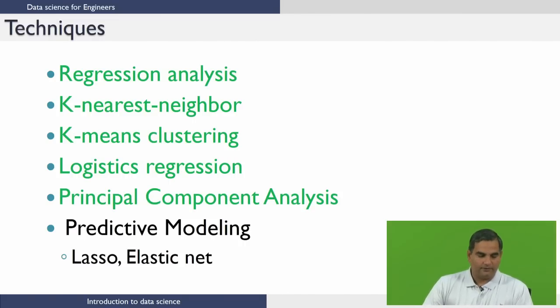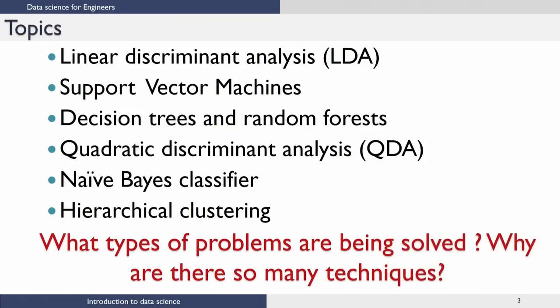Then people talk about predictive modelling, under which there are techniques such as lasso and elastic net. Then there are techniques such as linear discriminant analysis, support vector machines, decision trees and random forest, quadratic discriminant analysis, naive Bayes classifier, hierarchical clustering and many more such as deep networks and so on. To get a general idea of data science, one might be tempted to ask: if all of these collections of techniques solve data science problems, then what types of problems are being solved really, and do you need so many techniques for those types of problems?